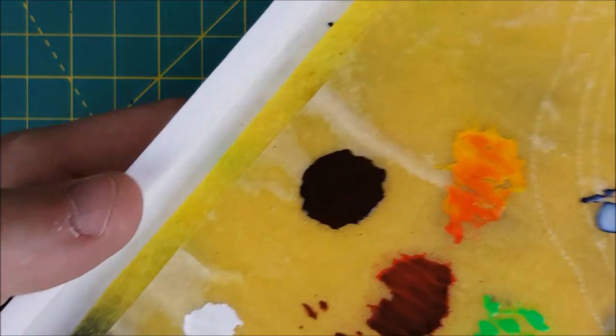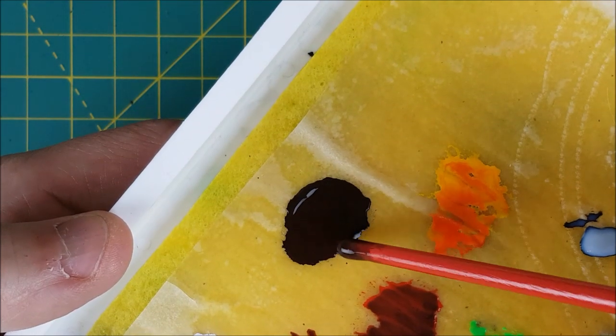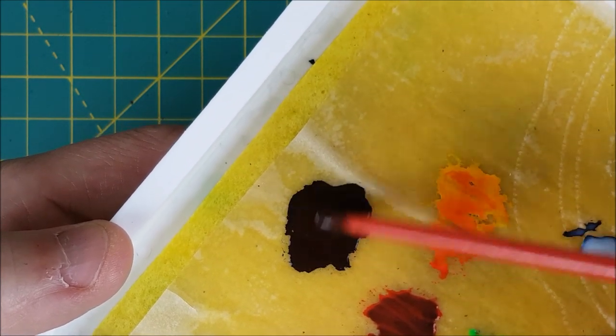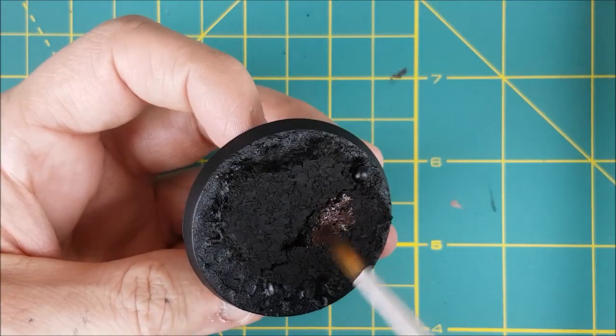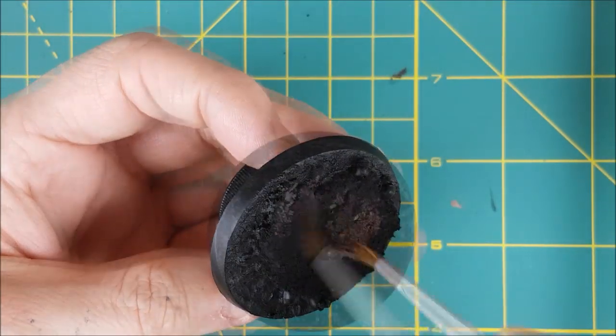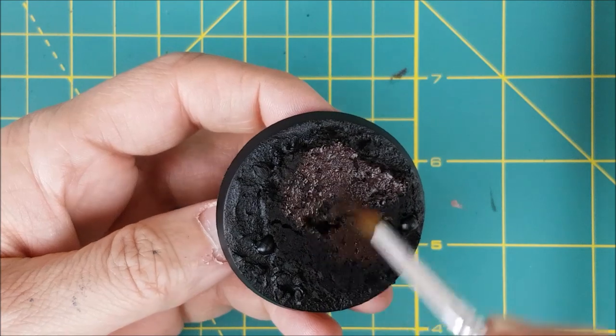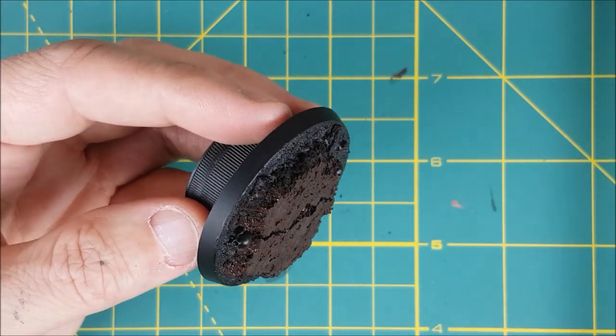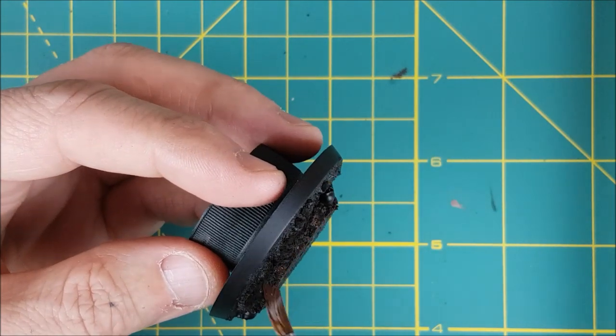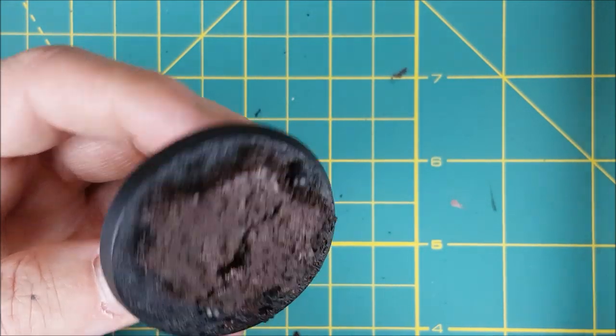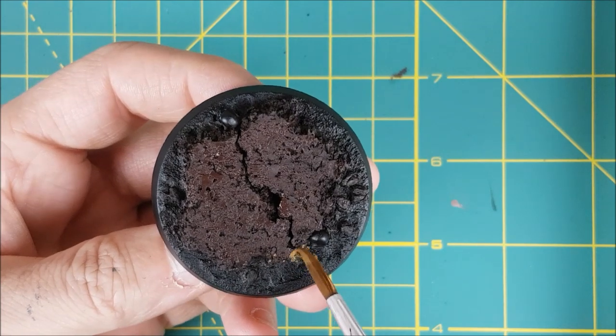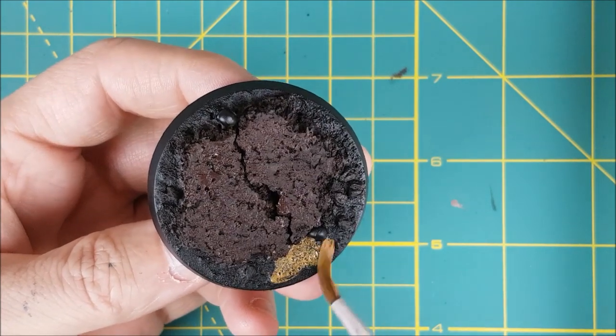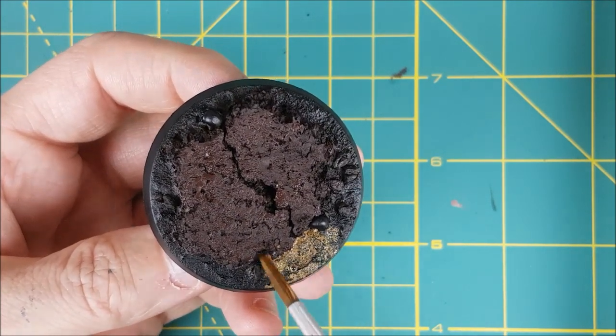So the first color I have here is Rhinox Hide. I'm mixing this one part paint, two parts water, get it good and watery. Then I'm taking an old crappy brush and I'm putting this all over the cork. It doesn't matter if this gets on everything else. In fact, go ahead and add it to the skulls and the rocks too. Next, I'm painting all of the earth texture with a light rusty brown. This one is just called Earth by Vallejo.